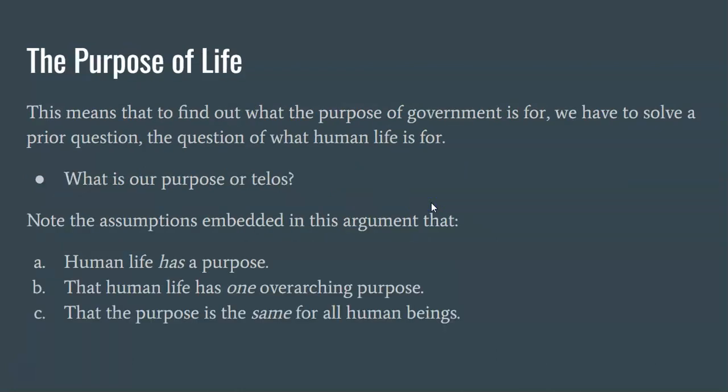This means that to find out what the purpose of government is for, we have to solve a prior question: the question of what human life is for. What is our purpose? What is our telos? In other words, we've replaced a question that looked tractable with something a lot more complicated. But note the assumptions embedded in his argument: he assumes that human life has a purpose, that human life has one overarching purpose rather than many, and that the purpose is the same for all human beings — that is to say, your purpose for living, your telos, is the same as mine.